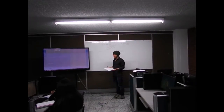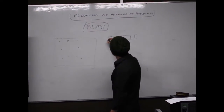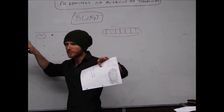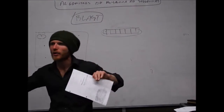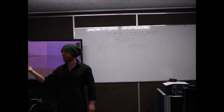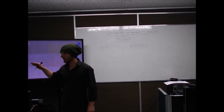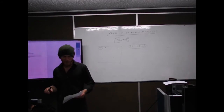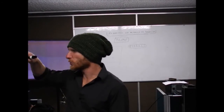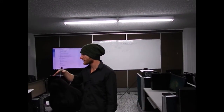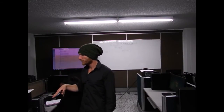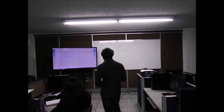La segunda fase es la extensión: toma la secuencia completa y la alinea en la posición centrada sobre la semilla, buscando un alineamiento óptimo y grabando el puntaje. Hace lo mismo para todas las semillas, alineando la secuencia completa hacia cada semilla. La tercera fase es la evaluación: presenta todas las secuencias encontradas, alineadas con la secuencia de búsqueda, ordenadas según el score.